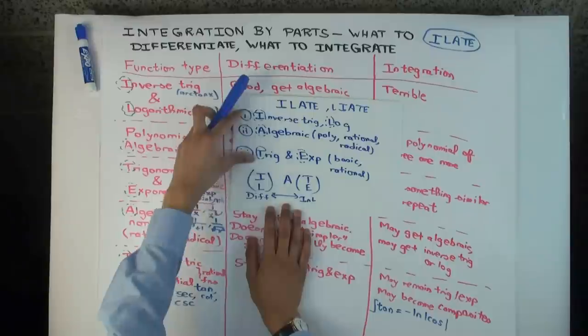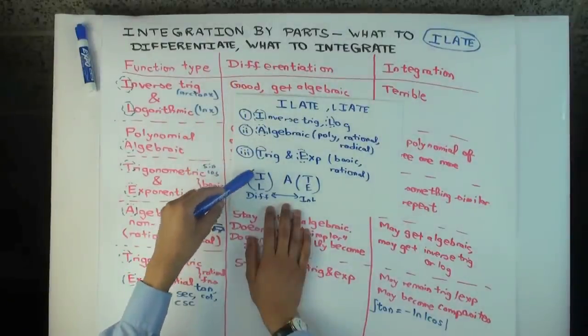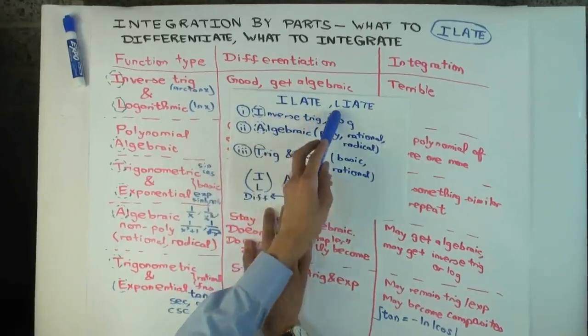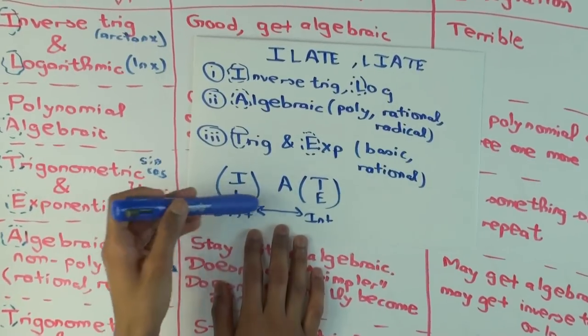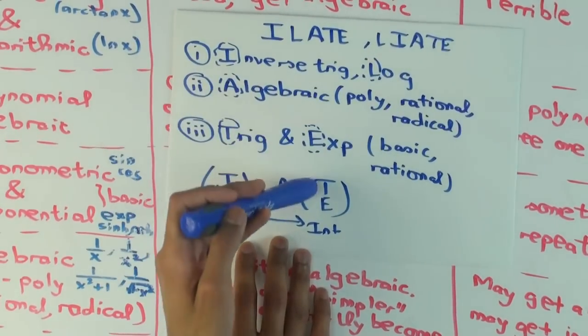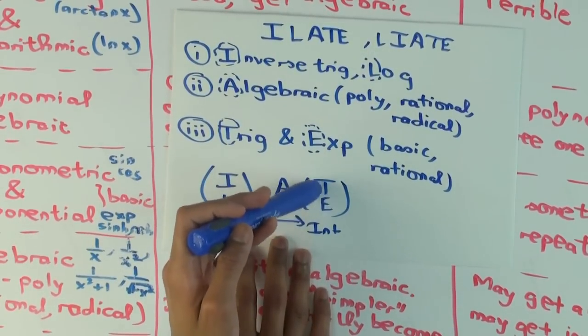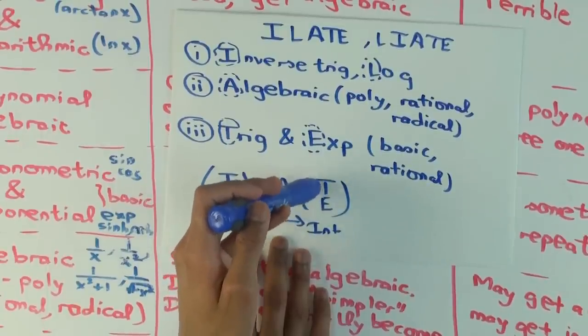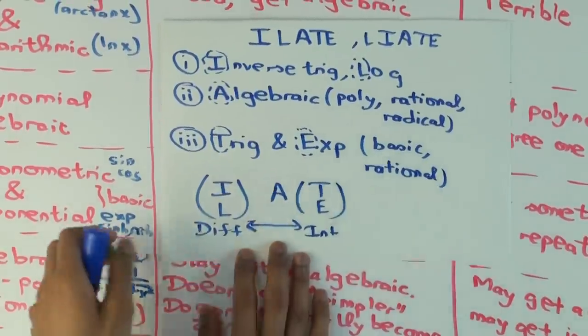So this is a very quick explanation of the precedence rule. Now the important thing is, inverse and log, there's no real precedence between them. Trigonometric and exponential, there's no real precedence between them. So some people write it as I-L-A-T-E, some people write it as L-I-A-T-E, it's up to you. But however, it may still help to keep a precedence between trig and exponential to basically avoid the circular trap. And we'll see that in an actual example. All right.